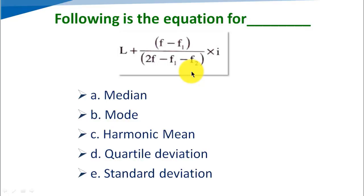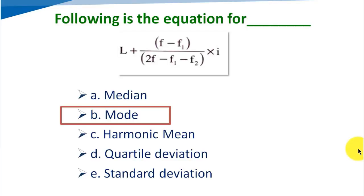The following equation — blank = L + [(f − f₁) / (2f − f₁ − f₂)] × i — stands for which measure? Option A: median, Option B: mode, Option C: harmonic mean, Option D: quartile deviation, Option E: standard deviation. The correct answer is Option B, mode.